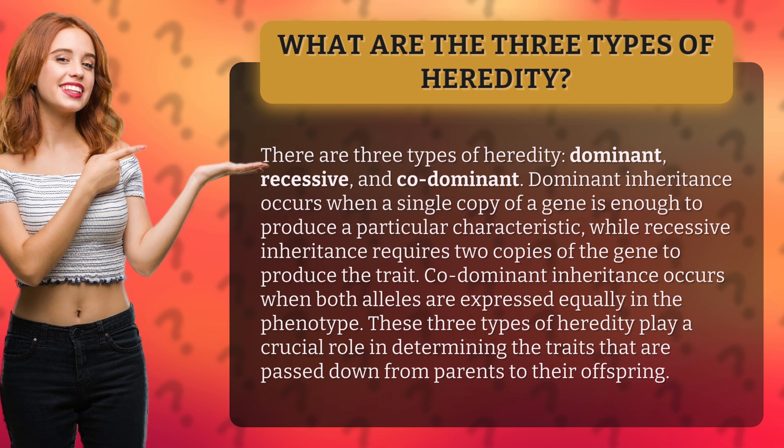Dominant inheritance occurs when a single copy of a gene is enough to produce a particular characteristic, while recessive inheritance requires two copies of the gene to produce the trait. Codominant inheritance occurs when both alleles are expressed equally in the phenotype.